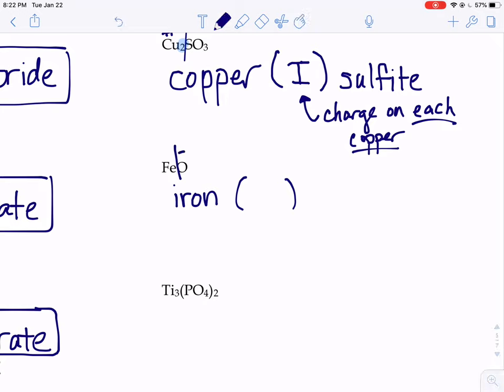There's only one O. It's not in parentheses with a little 2 or a little 3. So the whole right-hand side is negative 2. That means the whole left-hand side has to be positive 2. If there's only one iron there, it's got to be iron Roman numeral 2.